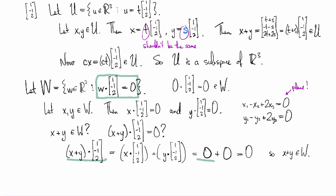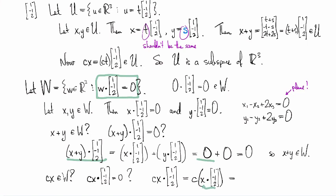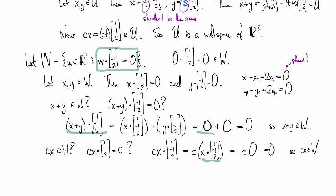So it's closed under addition. What about scalar multiplication? If we look at cx, is this guy in here? Well, the question to ask is, is cx dotted with my favorite vector equal to 0? And so the calculation for that is we say c times x, and we go ahead and we dot it with [1,-1,2]. And notice that I can pull the scalar out because scalars are slippery. And so this is c times x dotted with my favorite vector. And we know that, because we chose x to be in w, we know that the stuff inside the parentheses has to equal 0. So we get 0. So it is, in fact, a vector space.